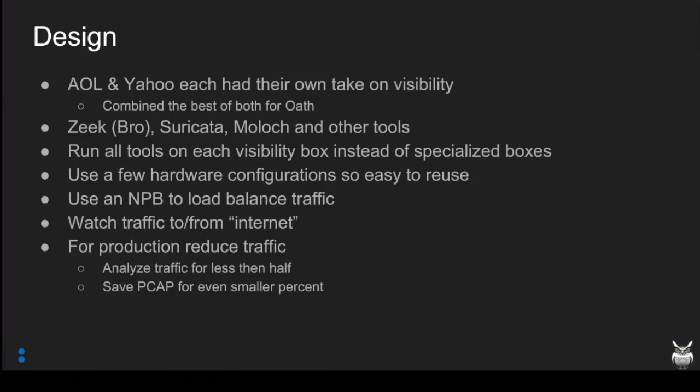We use the NPB to load balance traffic from our taps and span ports. We use Arista for that. For production, we have to reduce traffic because some of our production load is very high. Our goal for analyzing production traffic is less than half — we're analyzing less than half and storing a much smaller amount. We slice that number by 50% right from the start.